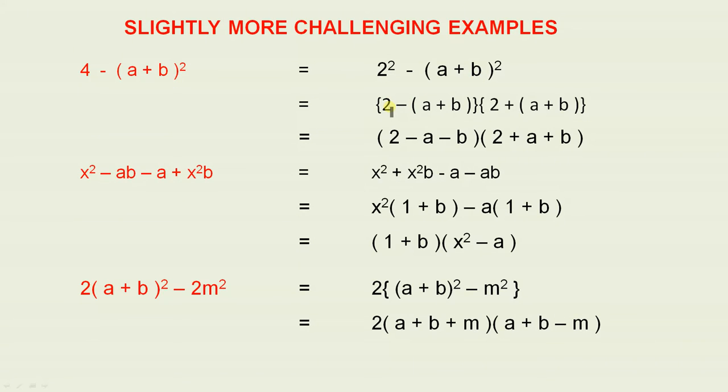So that's [2 - (a + b)][2 + (a + b)]. So if we remove the grouping symbols, we have (2 - a - b)(2 + a + b).